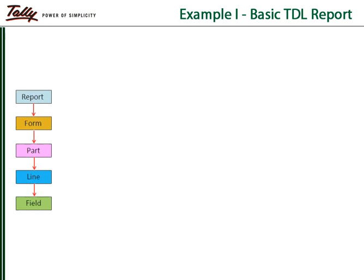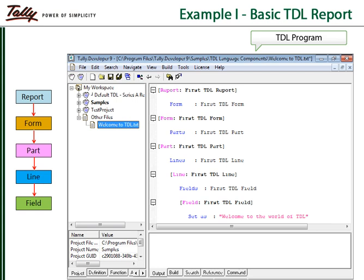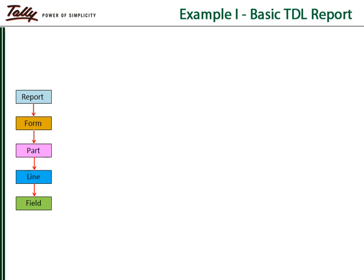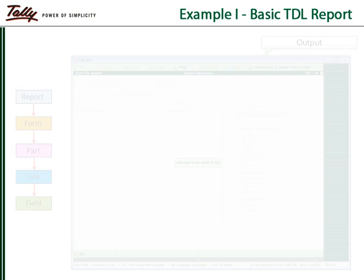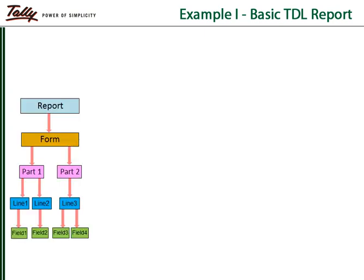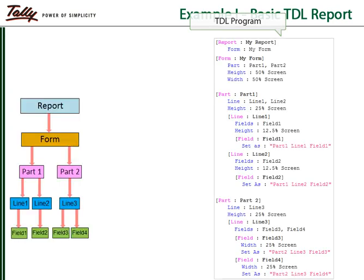Consider a basic TDL report consisting of a single field. The 'set as' attribute is used to set the value of the data within the field. We can always specify the dimensions for any interface element by making use of dimensional attributes.